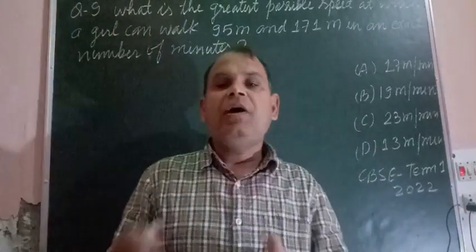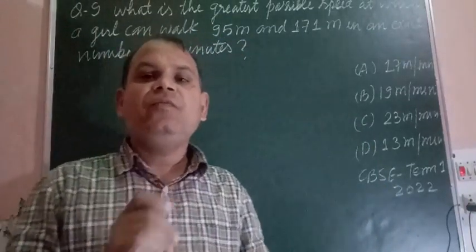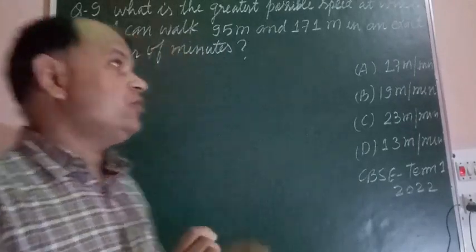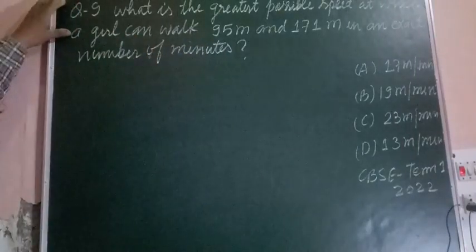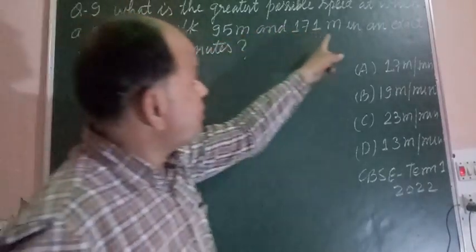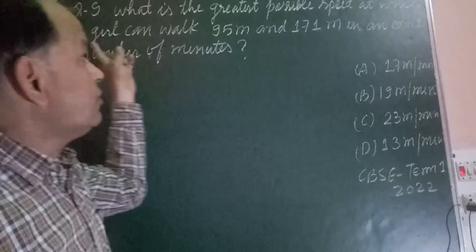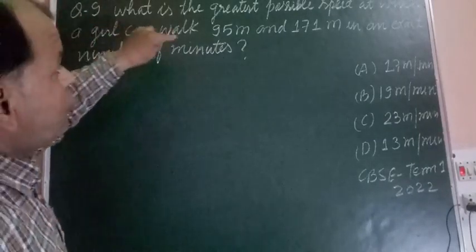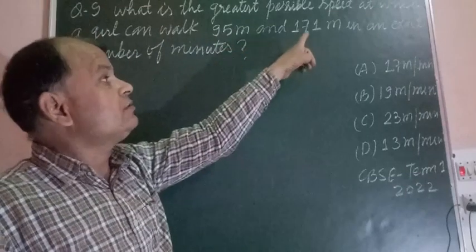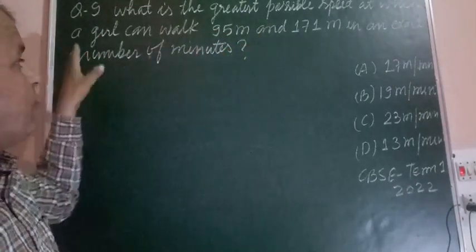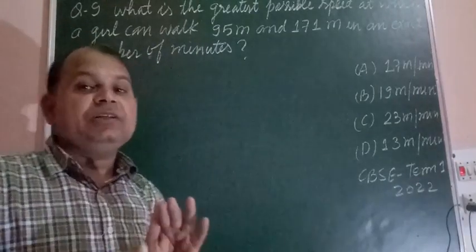Hello students and welcome to CBSE 2020 board paper solution. Here is a question from LCM and HCF: What is the greatest possible speed at which a girl can walk 95 meters and 171 meters in an exact number of minutes?